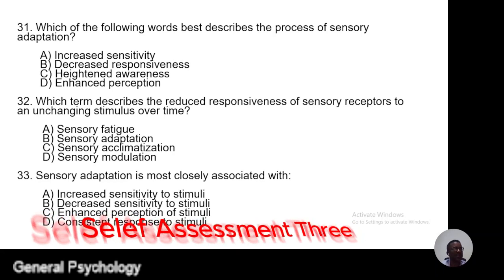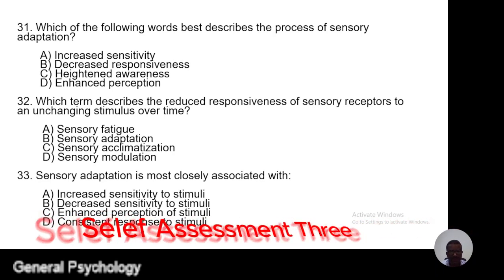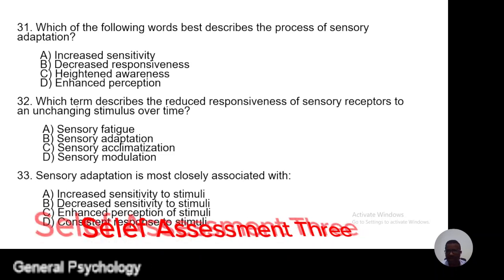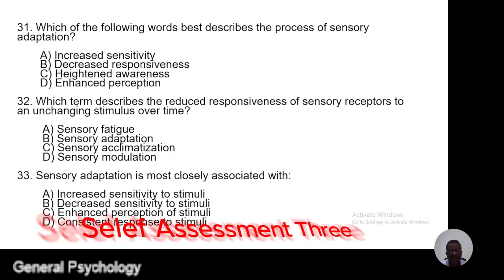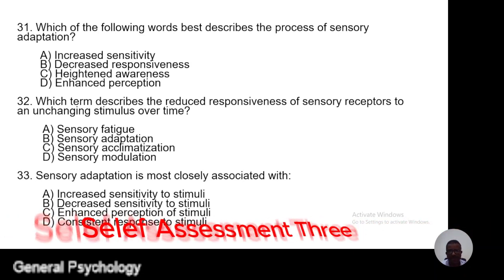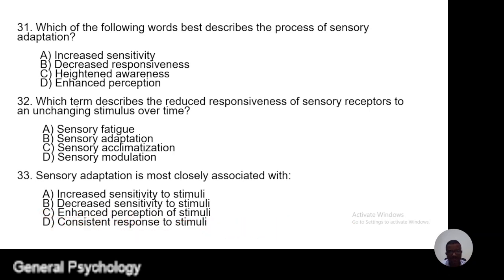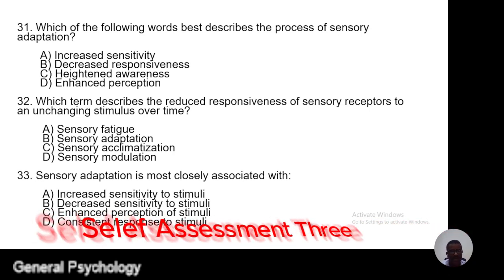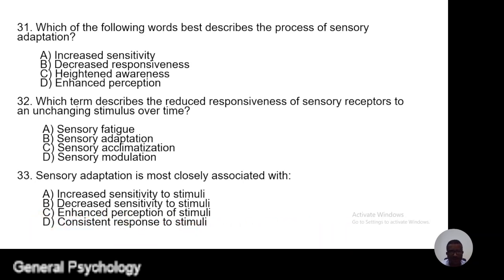Question 33. Sensory adaptation is most closely associated with: A, increased sensitivity to the stimuli; B, decreased sensitivity to the stimuli; C, enhanced perception of stimuli; D, consistent response to stimuli.